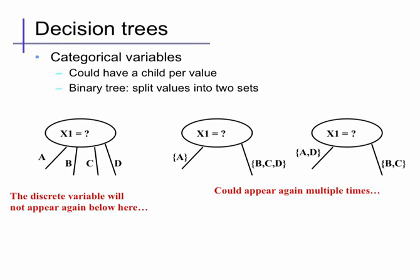For features that have discrete values, the notion of a threshold is not very meaningful, so we typically have a few possible options. First, we could branch on all possible values of the feature. So if we have a discrete feature x1 with four possible values — a, b, c, and d — we can make a branch for each of those.